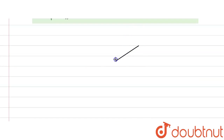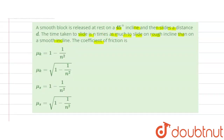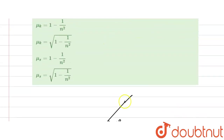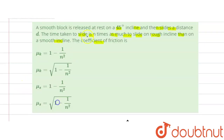We take an inclined plane at 45 degrees. The block slides a distance d. For the smooth incline the time is t, and for the rough incline the time is nt.